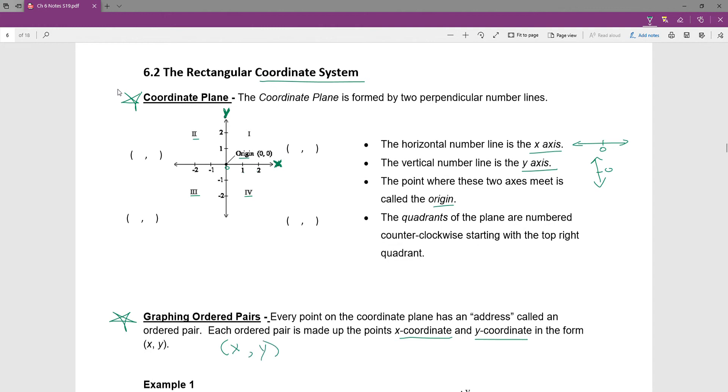And so if I were to go up to my graph at the top and give some examples here, in quadrant 1, if I had a point right here, that would be 2 on the x-axis and 3 on the y-axis. So this would be the ordered pair that gives the location of that dot.